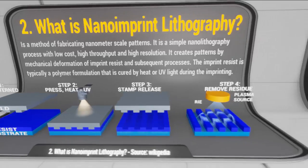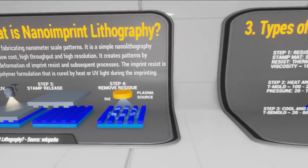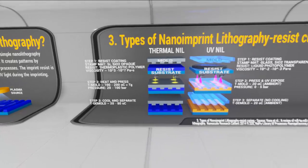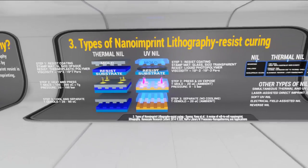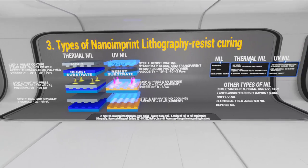Now we will move on to types of nano-imprint lithography. In terms of resist curing, there are two fundamental types of the process: thermal NIL and ultraviolet or UV NIL. Let's consider this in more detail.